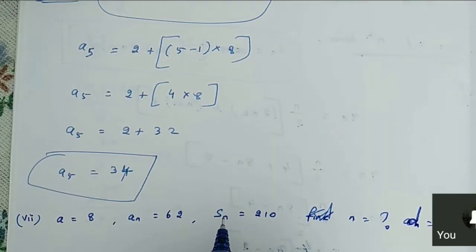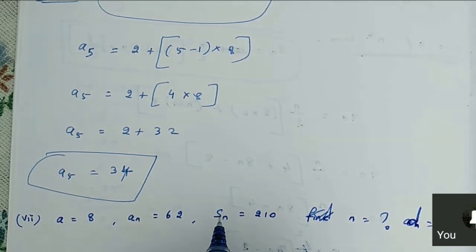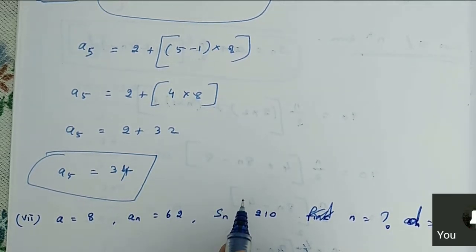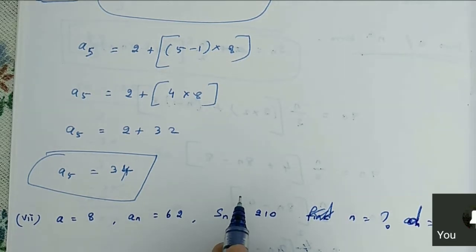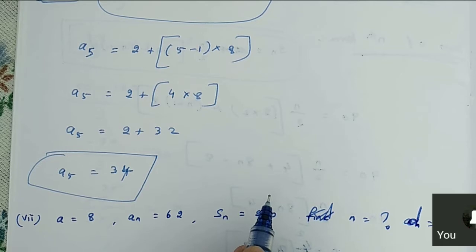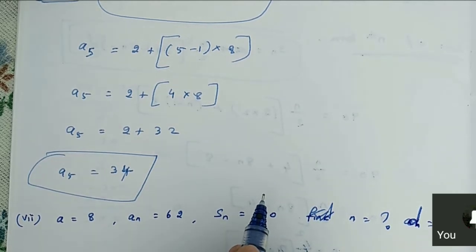Exercise number 5.3, page number 112, third problem, subdivision number 7. Here they are given: A is equal to 8, A_n is equal to 62, S is equal to 210. We are supposed to find the value of N and D.